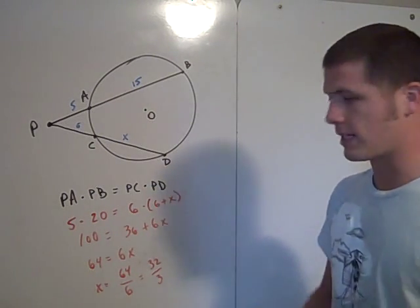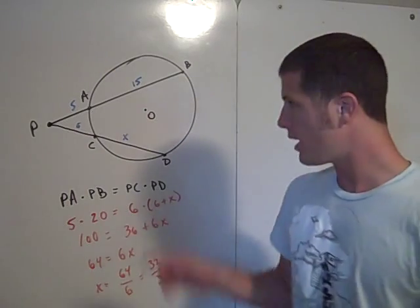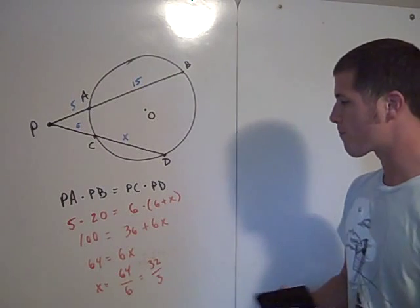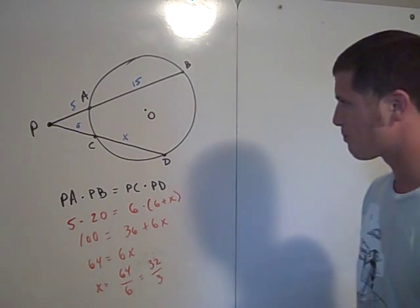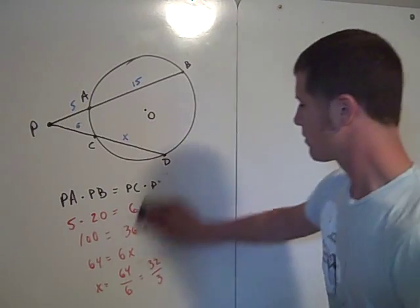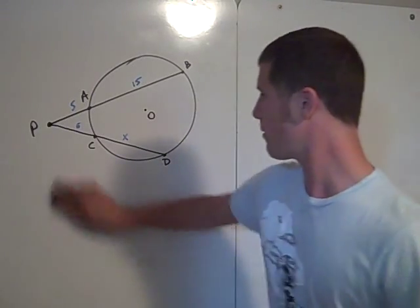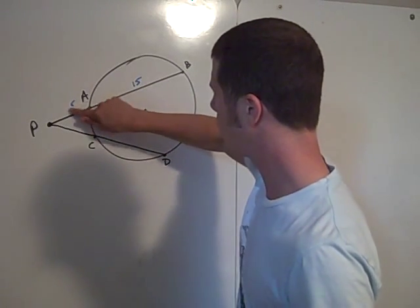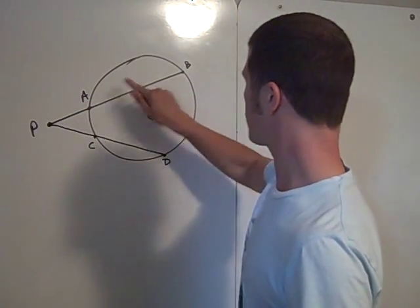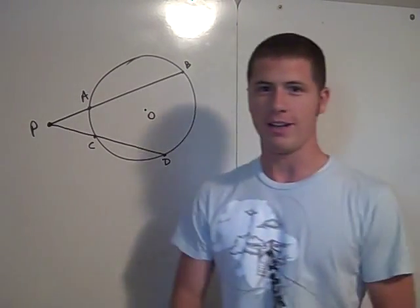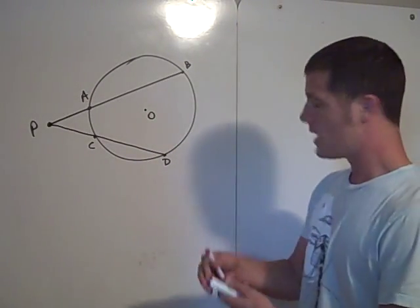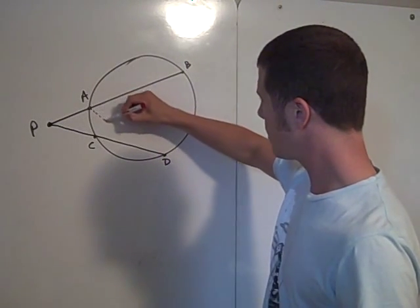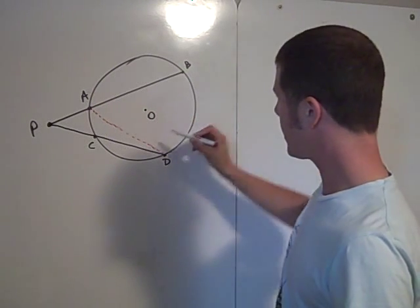So, that's the power of the point theorem. So, let's prove that using this diagram, although there's another diagram we could use. Maybe I'll do that in another video. Okay, so I'll just leave that diagram there. Well, as with most geometric proofs, you have to draw the right auxiliary lines. And in this case, those lines are AD and CB.